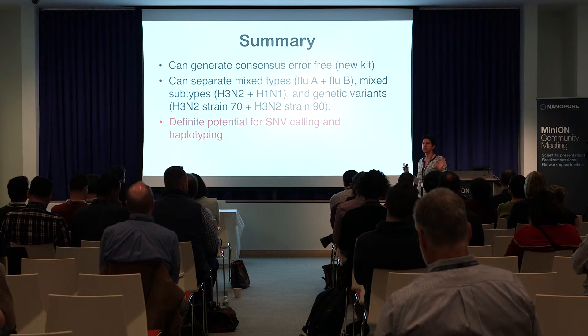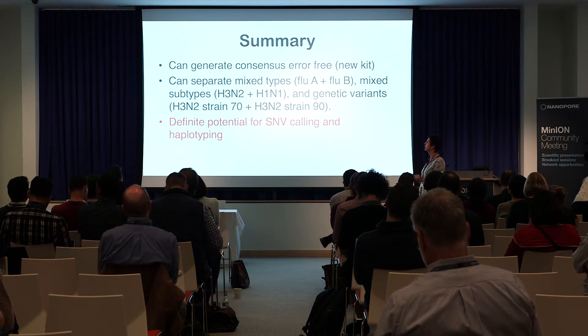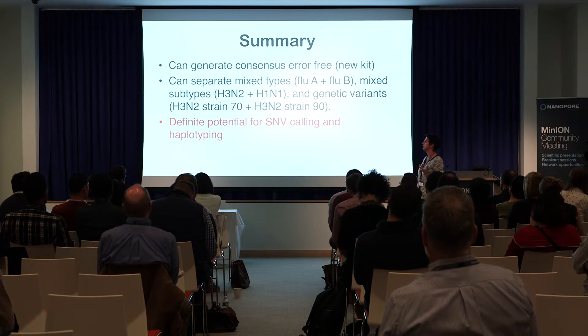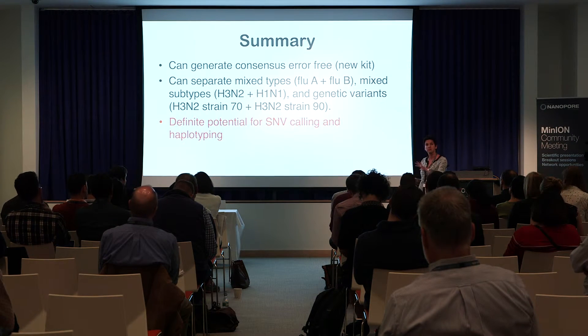In summary: the consensus is totally there — quick and good — and the new MAP-6 kit for flu is great. It can separate mixed types, mixed subtypes, and mixed strains, which is very important. For our interest in using this for transmission networks and minor variant detection, there's still work to be done on error correction, but there's definite potential.